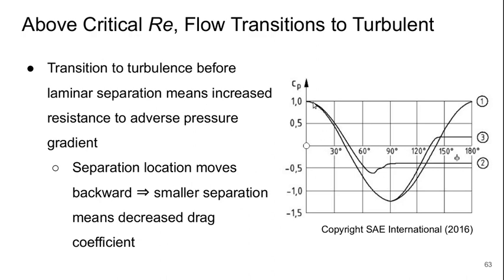Point two is a case before the critical Reynolds number with a laminar separation where pretty much from 90 degrees, so basically the top and bottom of the cylinder, the flow separates and so we have a constant pressure coefficient after that.